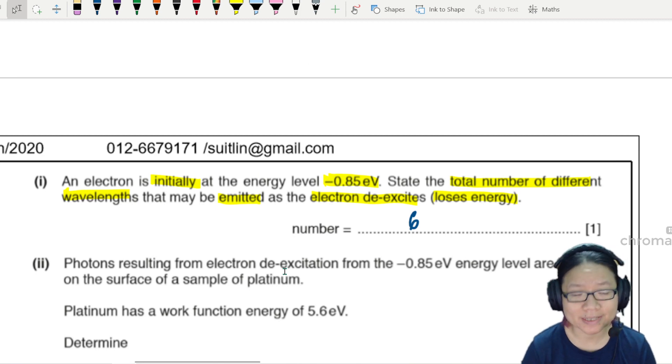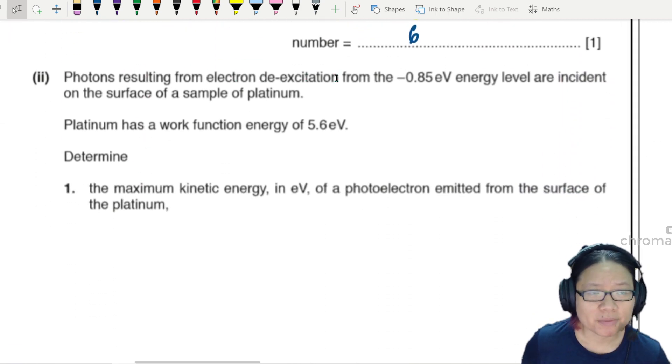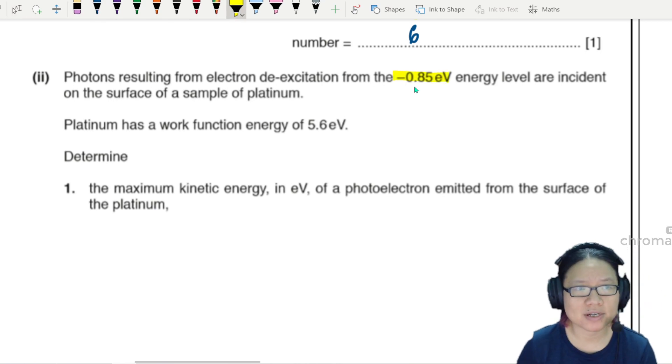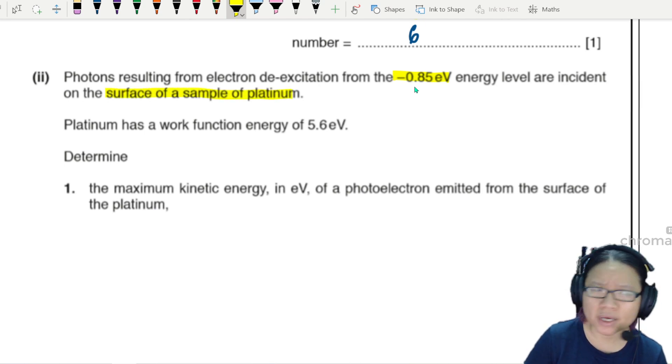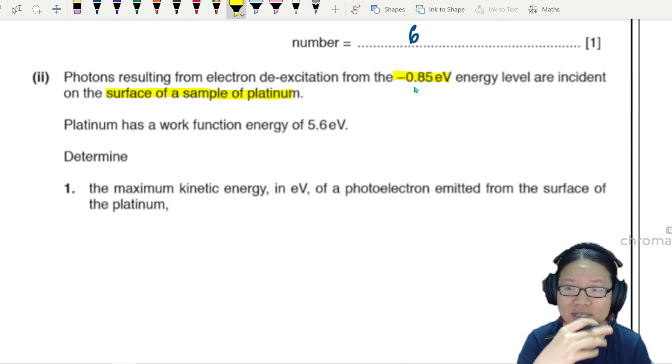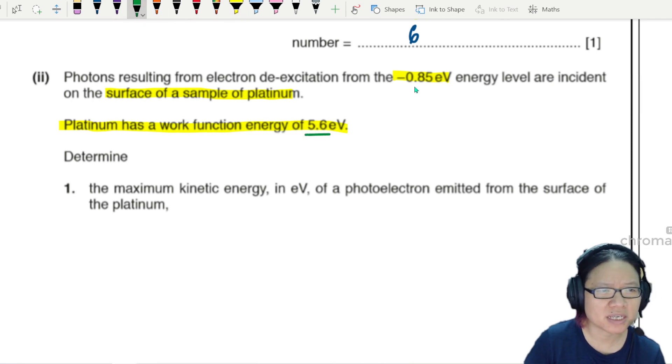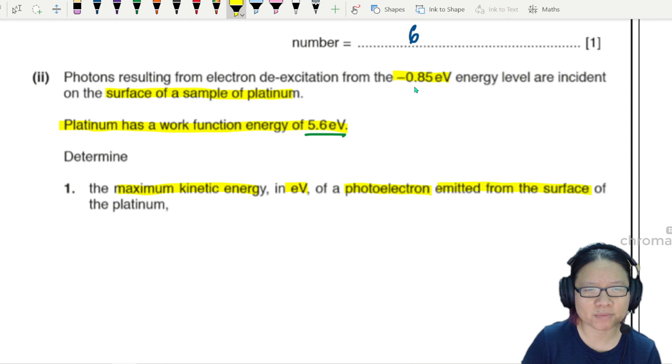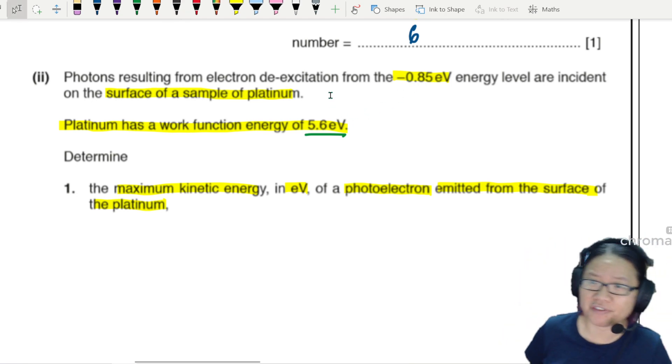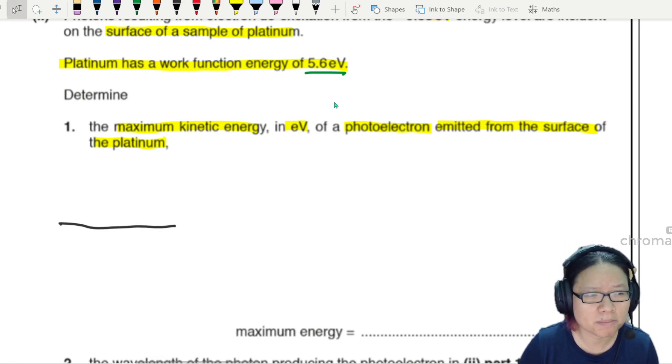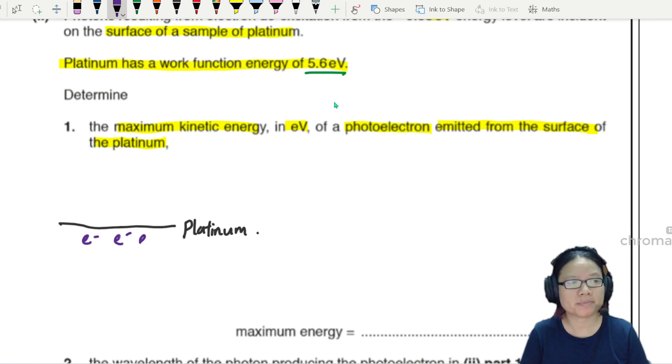Part two: photons resulting from electron de-excitation from negative 0.85 eV are incident on the surface of a sample of platinum. All six different wavelengths - we're going to send out the photons of six different wavelengths to platinum. Platinum has a work function energy of 5.6 eV. Determine the maximum kinetic energy in eV of the photoelectron emitted from the surface of platinum. Let me draw a metal surface. We think about the photoelectric effect - this is the metal platinum with electrons chilling in here.